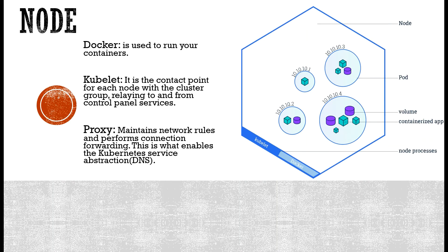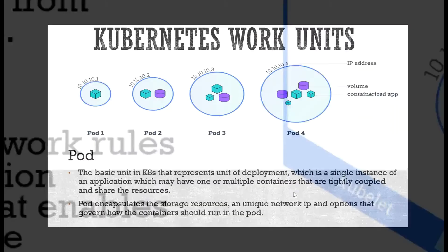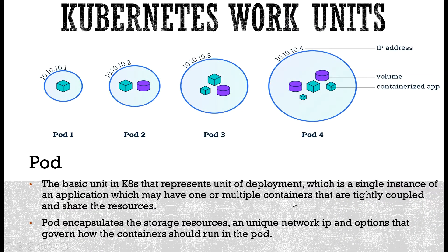Inside a node, the first component is Docker, used to run your containers. The second is kubelet — the contact point for each node with the cluster, relaying control plane services to and from. The third is the proxy, which maintains network rules and performs connection forwarding. This is what enables the Kubernetes service abstraction — that is, the domain naming service.